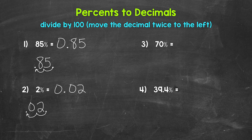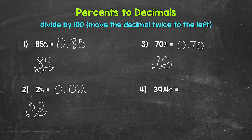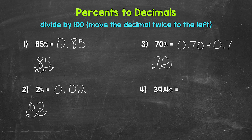Let's move on to number three, where we have 70%. I'm going to rewrite this underneath with a decimal, and then let's divide by 100. So move the decimal once, twice, to the left. So we get 0.70. 70% equals 0.70. Now, zeros to the right of decimal digits do not change the value, so we can also write this as 0.7 — seven tenths. These decimals are equivalent, so they are both correct.